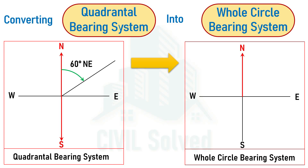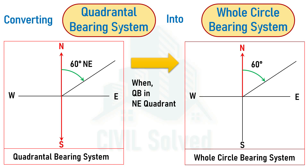and we are asked to convert it into the WCB system, the same line is drawn. In the whole circle bearing system, the angle is always measured from true north clockwise, so the angle would be 60 degrees — but we do not write the quadrant. So 60 degrees is the bearing in WCB. If the line lies in the northeast quadrant, the formula is: WCB = QB bearing.